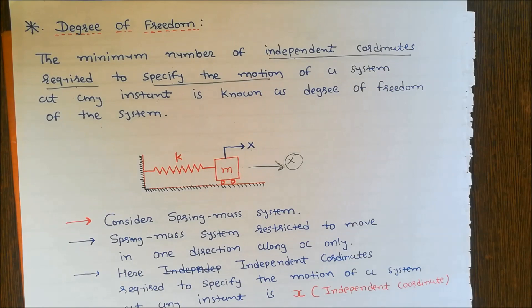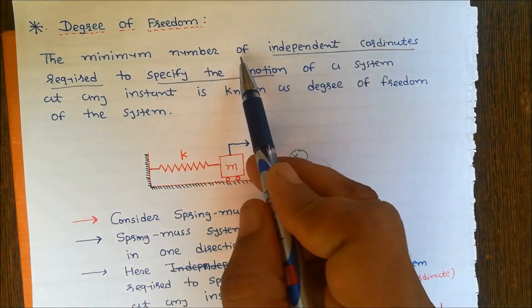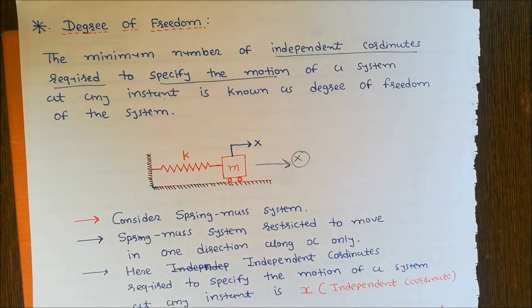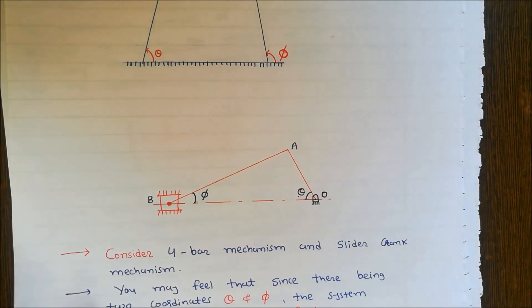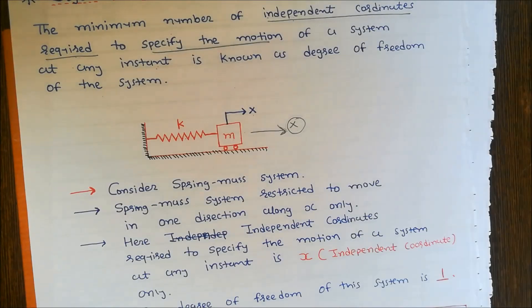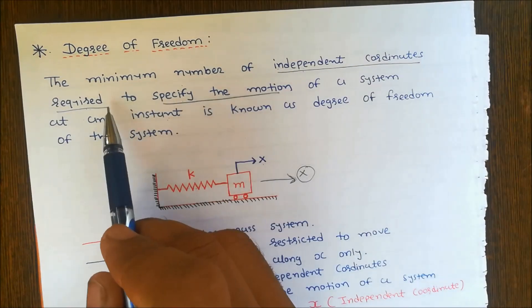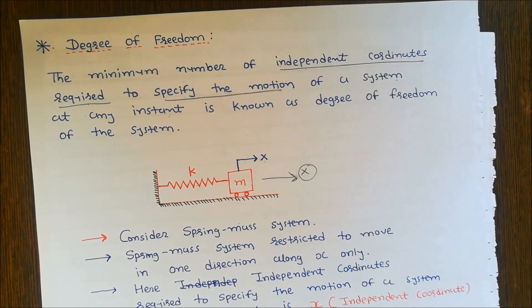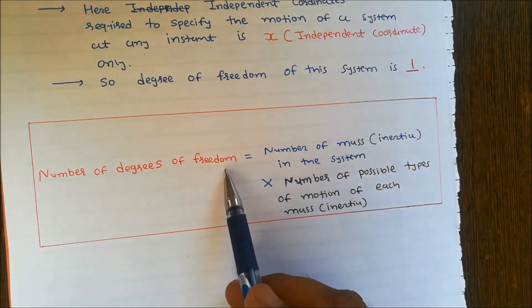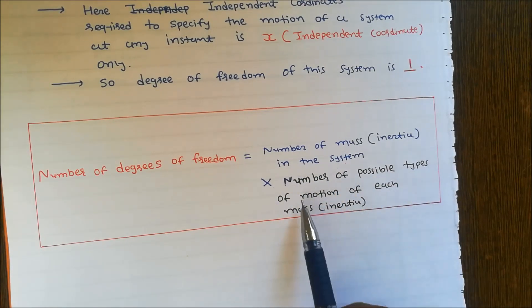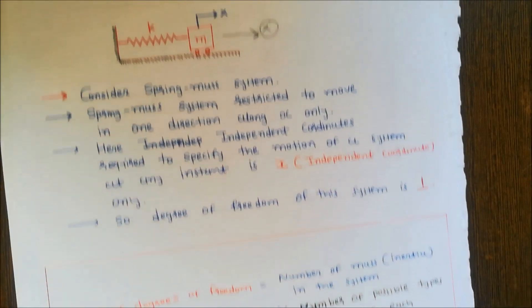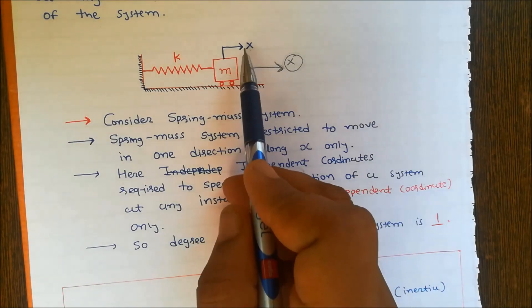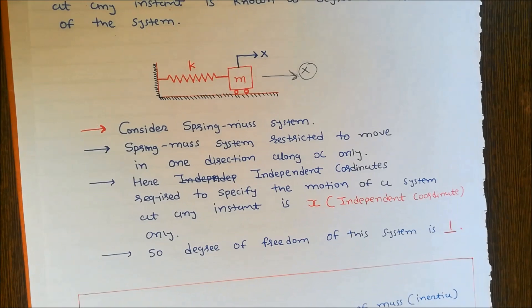To recap: the degree of freedom means the minimum number of independent coordinates required to specify the motion of a system at any instant. In the case of the slider-crank mechanism and four-bar mechanism, there are two coordinates theta and phi, but phi depends on theta, so only one independent coordinate is required — degree of freedom is one. An example of one degree of freedom is the spring-mass system restricted to move only along the x direction; the only coordinate required is x.